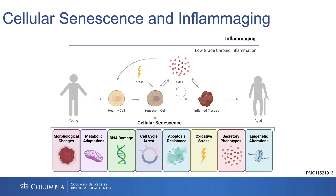These SASP factors can damage adjacent tissues, sometimes even causing secondary senescence, as well as feeding back on themselves to re-stimulate them. These SASP factors can also hit the bloodstream and act over long distances, almost in an endocrine fashion.